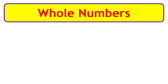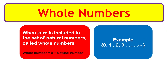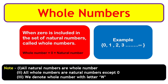Whole numbers: when zero is included in the set of natural numbers, it is called whole numbers. We can say whole numbers equal zero plus natural numbers. Example: 0, 1, 2, 3, etc. Note: all natural numbers are whole numbers, but all whole numbers are not natural numbers — except zero. We denote whole numbers with the letter W.